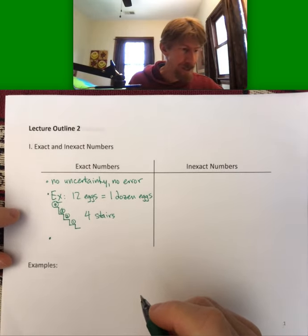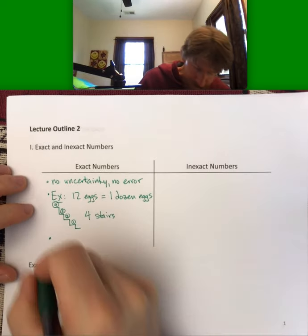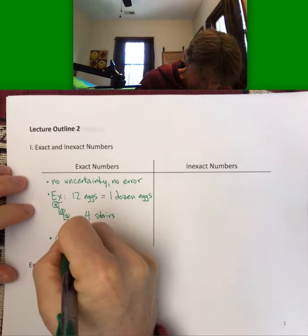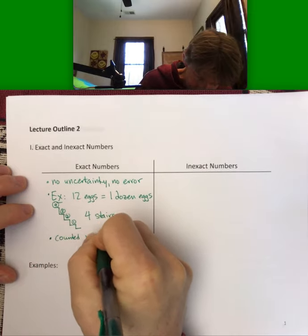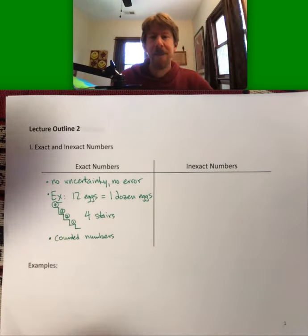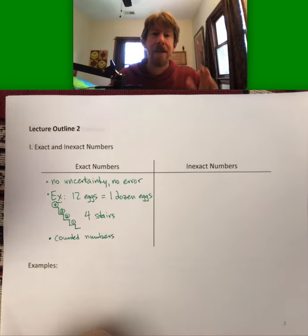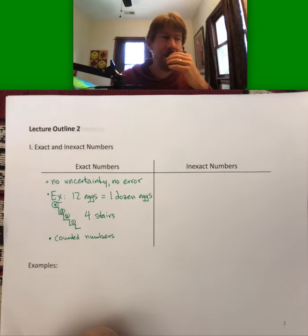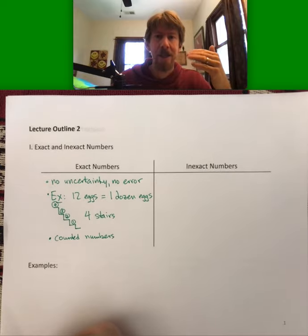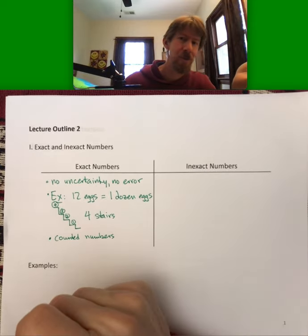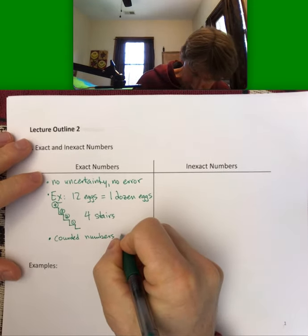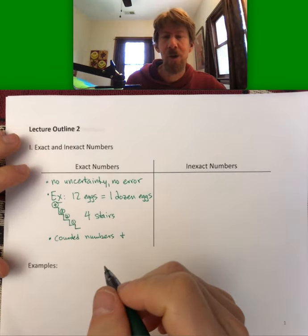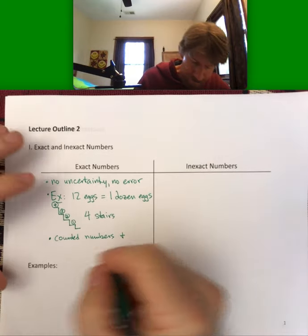Stairs are another example — they're counted numbers. If I draw a set of stairs and count them: one, two, three, four stairs. There's no 'three and a third' stairs that has real meaning. Also, unit conversions like one meter equals 100 centimeters are also exact — so counted numbers and whole number conversion factors.